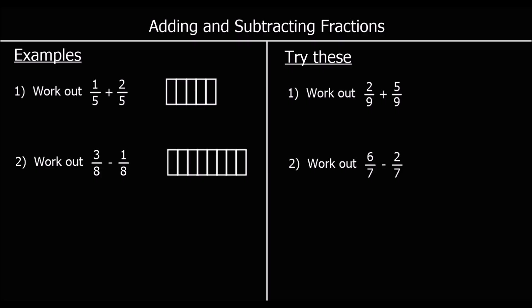We can only add things that are the same. With fractions, that means we can only add fractions with the same denominator — the same number on the bottom. So we can add thirds to thirds, quarters to quarters, fifths to fifths, sixths to sixths, and so on. We can only add them when they are the same.